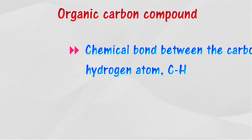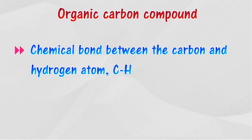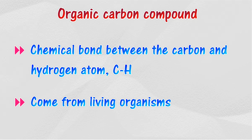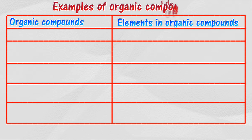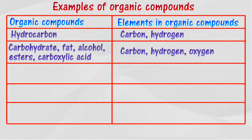Organic carbon compound is a carbon compound that contains a chemical bond between the carbon and hydrogen atom. Such compounds originate from living organisms, such as plants and animals. Some examples of organic carbon compounds are hydrocarbons and carbohydrates.